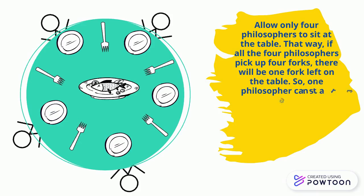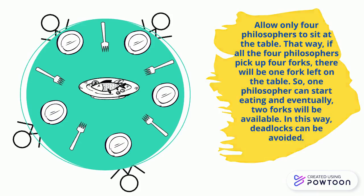So, 1 philosopher can start eating and eventually, 2 forks will be available. In this way, deadlocks can be avoided.